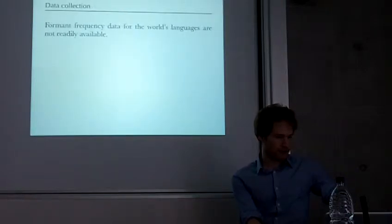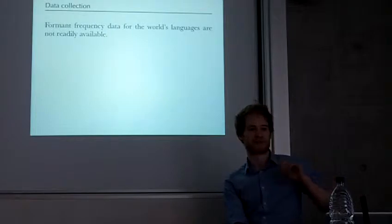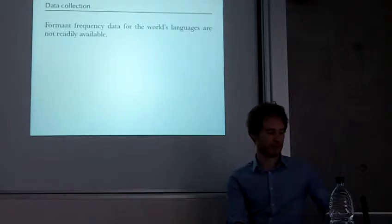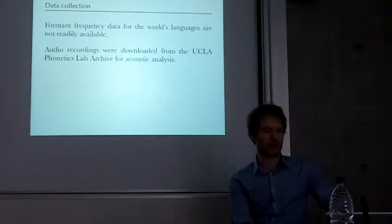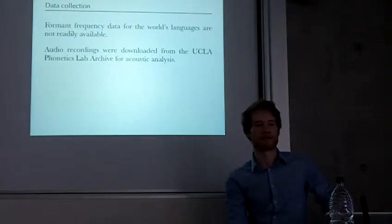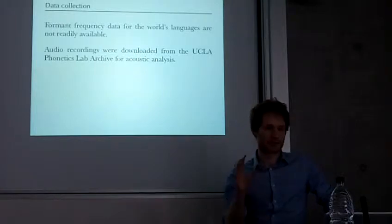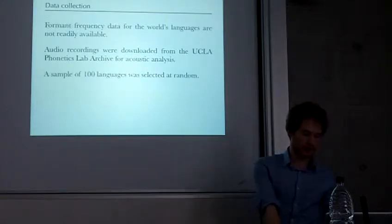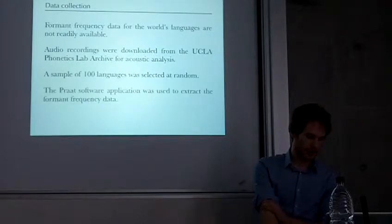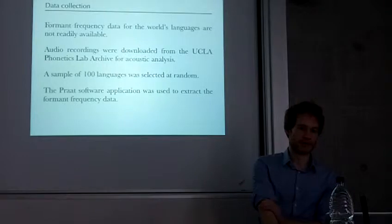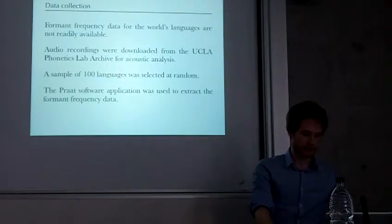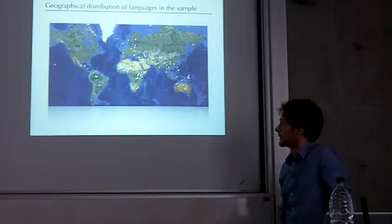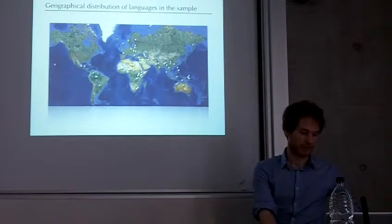There's not really a whole bunch of data out there with the formant frequencies of loads of languages. So I kind of had to just go and do loads of formant measurements manually. My data comes from the UCLA Phonetics Lab Archive, which is an online archive of something like 200 or 300 languages from around the world. I chose a sample of 100 languages just selected at random and used the Praat software application to extract and measure the formant frequency data. This is a map showing the geographical distribution of languages in the sample. You can see it's pretty well spread across the world. There's no particular focus on European languages.